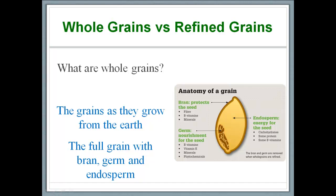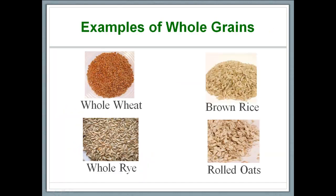So what are some examples of whole grains? Well, here they are: whole wheat, brown rice, whole rye, and rolled oats are all examples of whole grains.